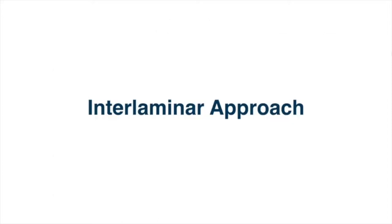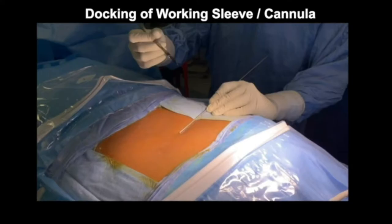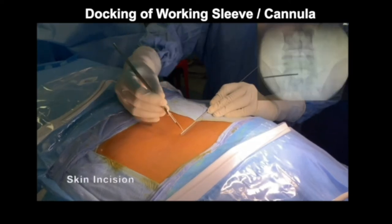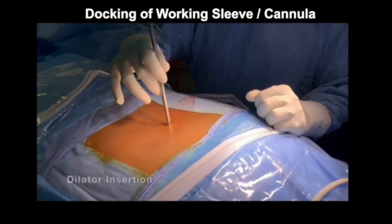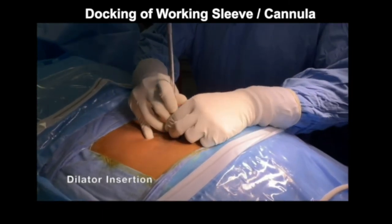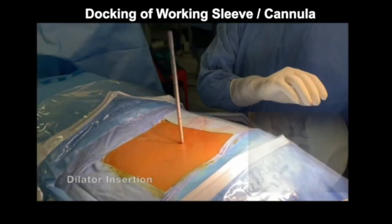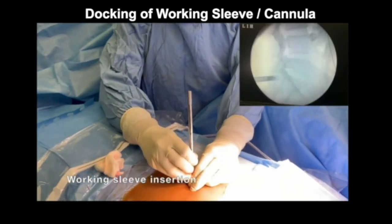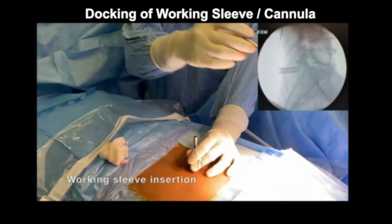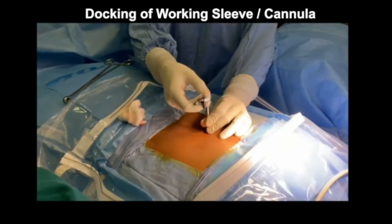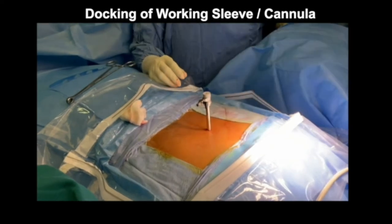Now coming to the second technique — the interlaminar approach, which is familiar to most spine surgeons. The surgical technique begins with docking of the working sleeve or cannula. You identify the center of the interlaminar space, make an 8-millimeter incision through which the dilator is inserted to the facet joint level. Once position is confirmed, the working sleeve is slid over the dilator, final position confirmed, and the docking process is complete.